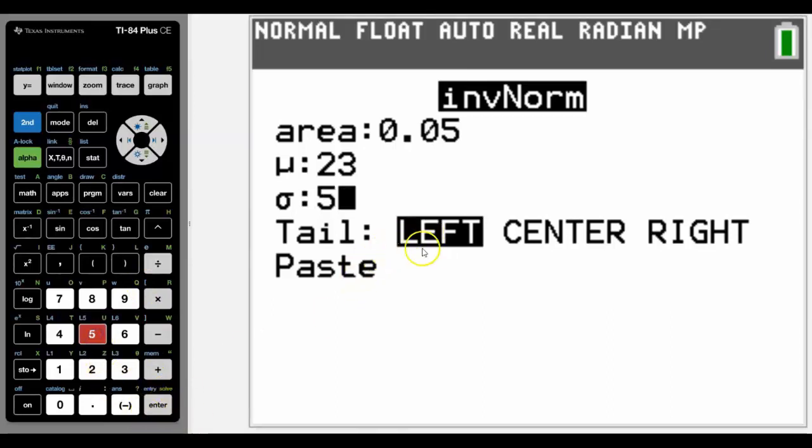And the nice thing is now with the more newer OSs, we can either find the left bound, the lower, we can find the upper five percent, or we can find the middle five percent. So that'll be two and a half percent either side of the mean.